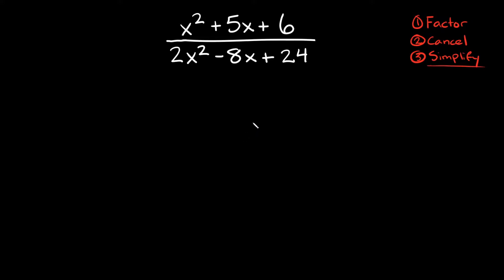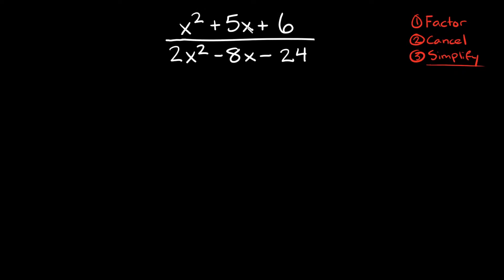I'm just going to start with this example right here: x squared plus 5x plus 6 over 2x squared minus 8x minus 24.